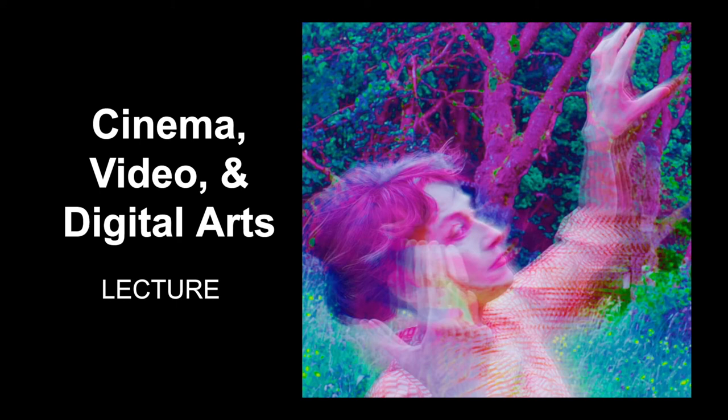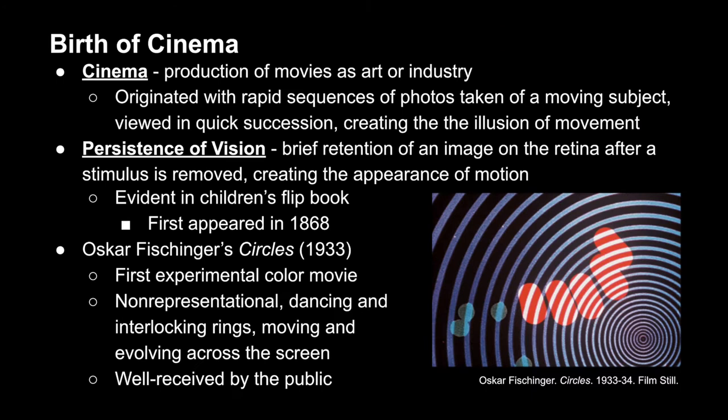In this video we're going to address cinema, video, and digital arts. Cinema as a term refers to the production of movies within the industry itself or as an art form. Originally these videos were just a rapid sequence of photos, so as the subject was moving they would move incrementally throughout the photos, giving the illusion of movement because they were shown in such quick succession.